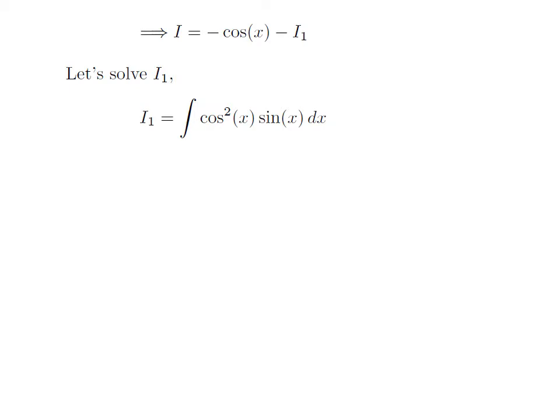Now let's solve I1. I1 is equal to the integration of cos²(x) · sin(x) with respect to x. To simplify this integration, let's apply the substitution method. Assume u is equal to cos(x).